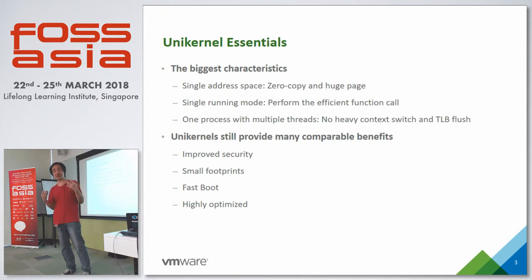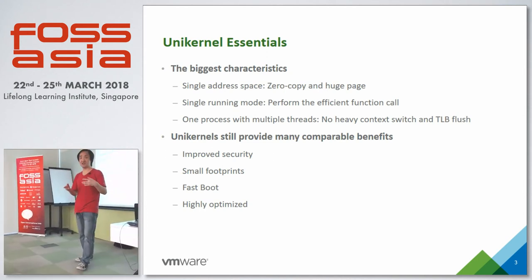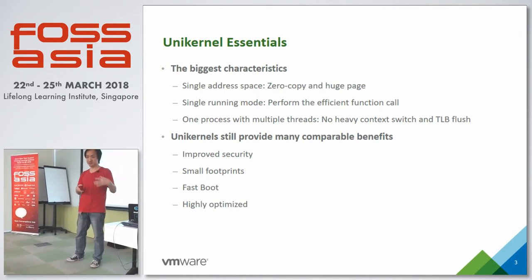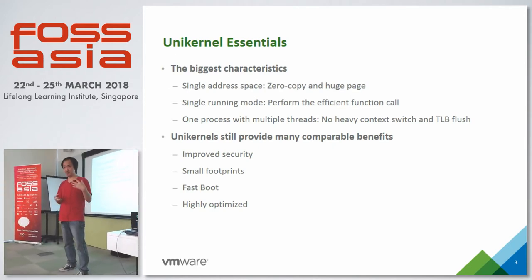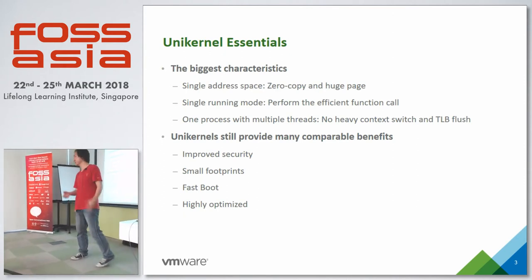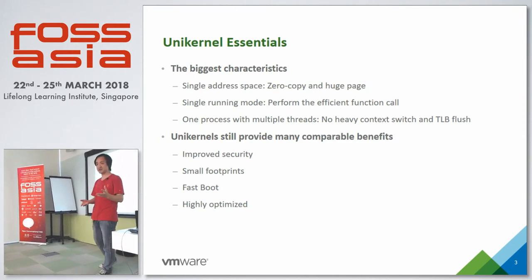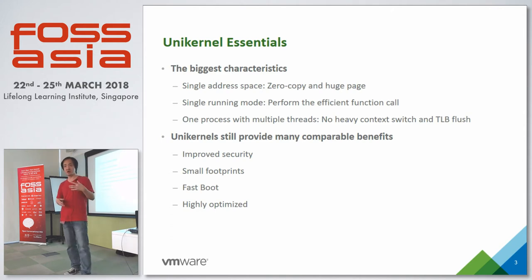The first benefit is improved security, because essentially a Unikernel is still a VM - but a lightweight VM - and it's protected by hardware virtualization technology. The attack surface is reduced significantly. And again, we just run one process. At the same time, we get a small footprint, fast boot, and can also highly optimize. We can use a large TCP/IP stack and parallelize operations, meaning we can get very good I/O performance.